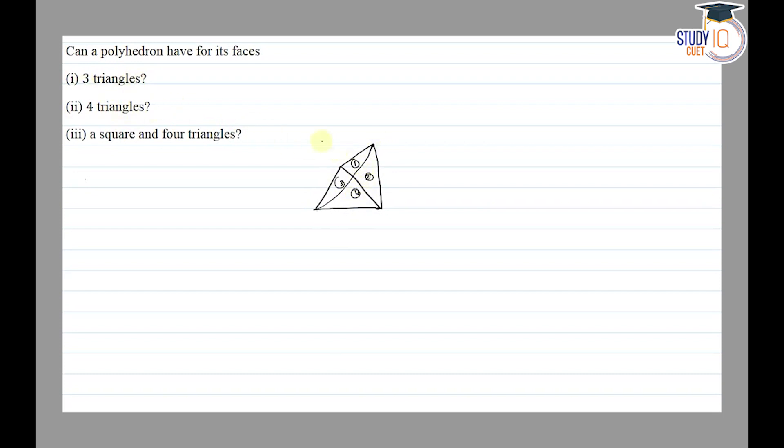We have four faces, so no for three triangles. Now for four triangles - we have four faces, so yes, we have four triangles. And for a square and four triangles, with a square base we can check this.